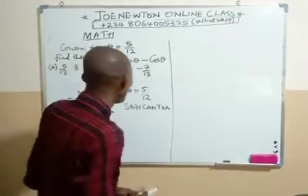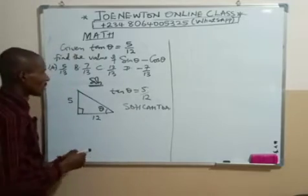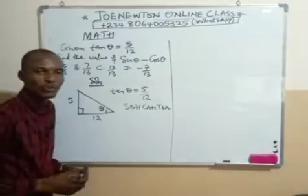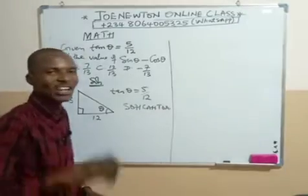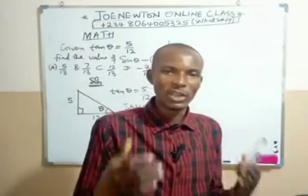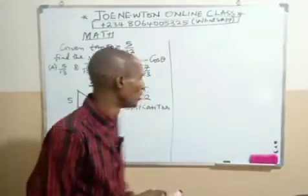The next step here is to find the longest side which is the hypotenuse in this triangle. Then, we use the Pythagorean rule or the Pythagorean formula.